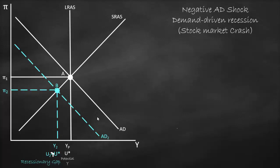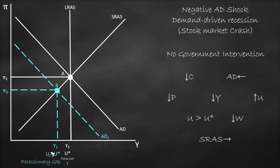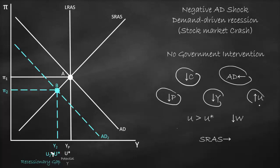To reach equilibrium we must return to potential output. Let's assume there is no government intervention — no fiscal policy and no monetary policy from the central bank. In the long run, lower consumption from the stock market crash keeps aggregate demand lower, so prices go down, output goes down, and unemployment goes up. Because unemployment exceeds the natural rate of unemployment, wages will drop. Lower wages reduce the cost of production, giving producers a motive to produce more, so the short-run aggregate supply curve will shift to the right.